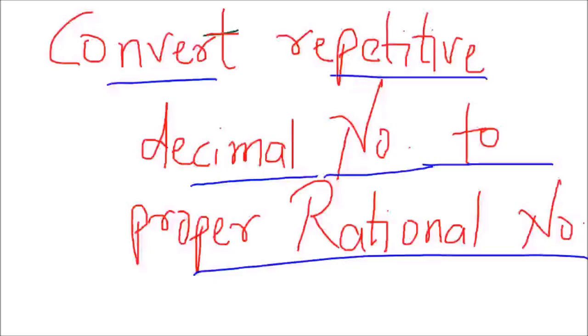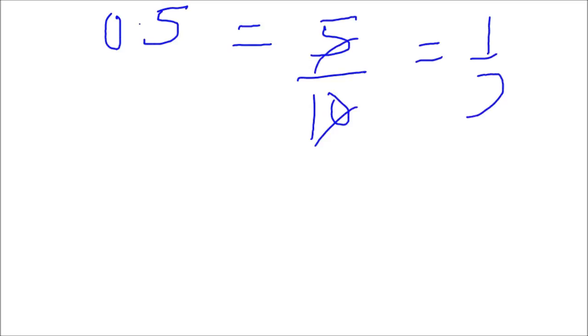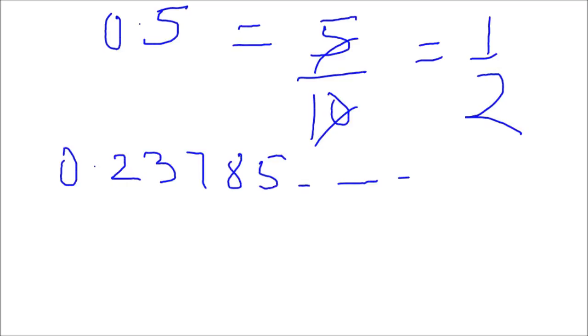For example, suppose the number is 0.5. This is a rational number because it can be written as a ratio: 5 by 10, which gives 1 by 2 — it's a ratio, so 0.5 is a rational number. Now, if the number is 0.23785 something something, a never-ending number, this number cannot be written as a ratio. So I denoted irrational numbers as numbers which are non-terminating and non-repetitive.